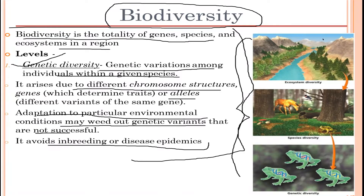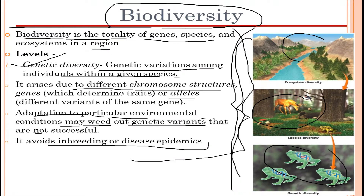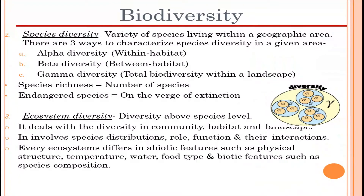As you can see in the picture, we have ecosystem diversity, species diversity, and genetic diversity. Biodiversity is the sum total of all of these. It arises due to different chromosome structures, species, genes, or alleles, and due to adaptations to different environments — cold, hot, or otherwise. It avoids inbreeding and disease epidemics, which is a very positive point.